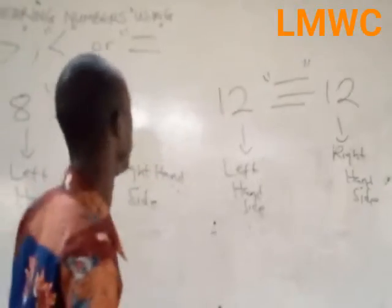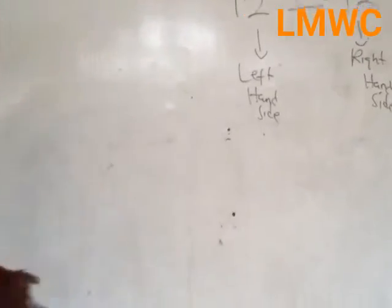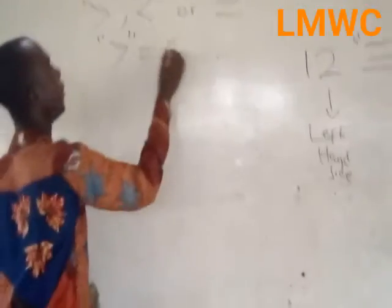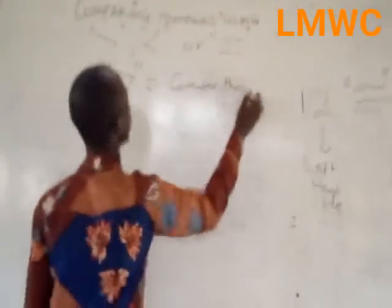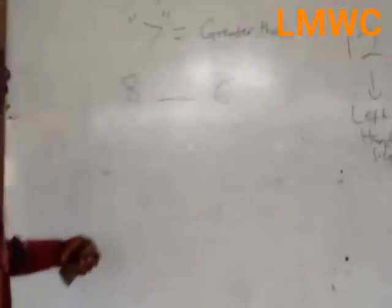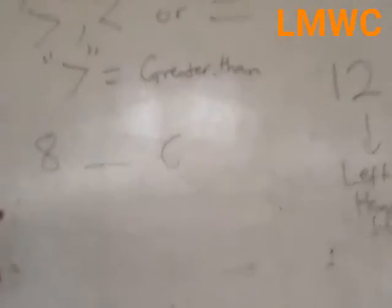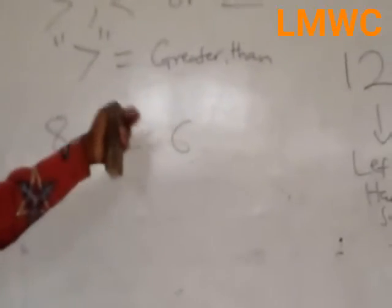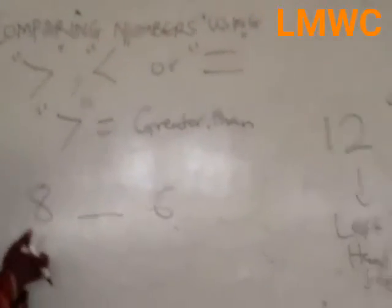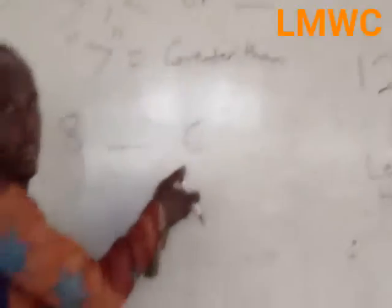So I'm done with equal to. Now, greater than. This is the greater than symbol. So if I give you something like this — the number at the left-hand side is greater than the number at the right-hand side. Because this is 8 and this is 6.